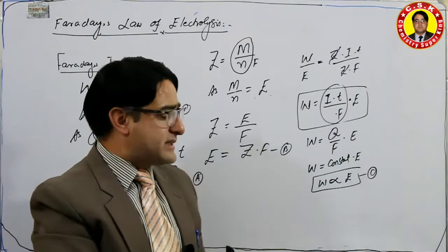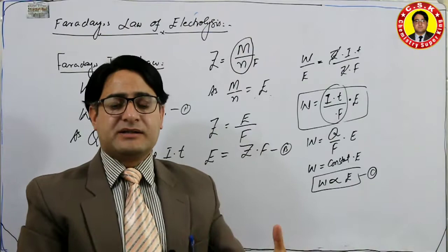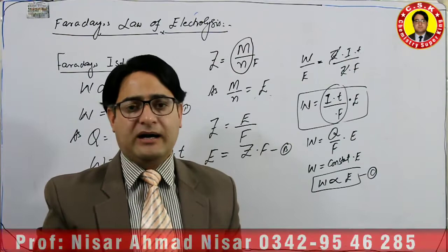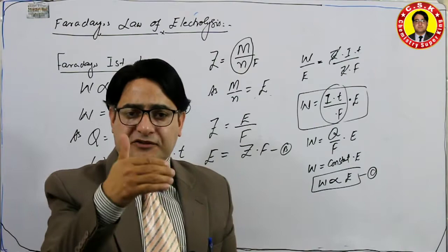From this relation, Faraday developed the Second Law. So dear students, I hope the First Law is clear. The statement of the First Law is: the amount of substance deposited or liberated at an electrode is directly proportional to the quantity of electricity passed through the cell.